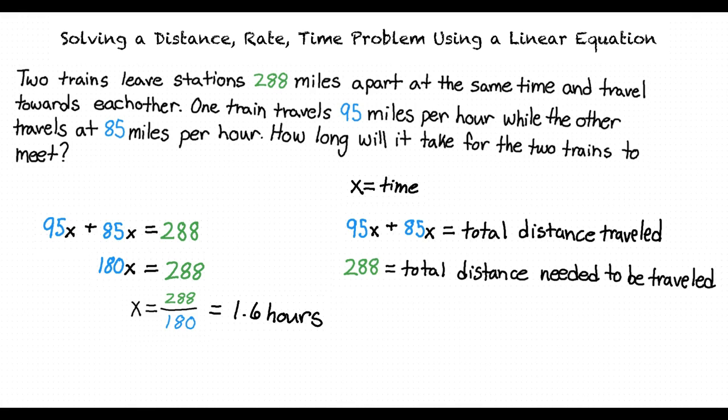I think I understand what's going on here. To solve a distance, rate, time problem using a linear equation, I think it's important to identify which information is given by the problem and which information must be solved for. We can then create an equation using our information that allows us to solve for what is asked for in the problem.